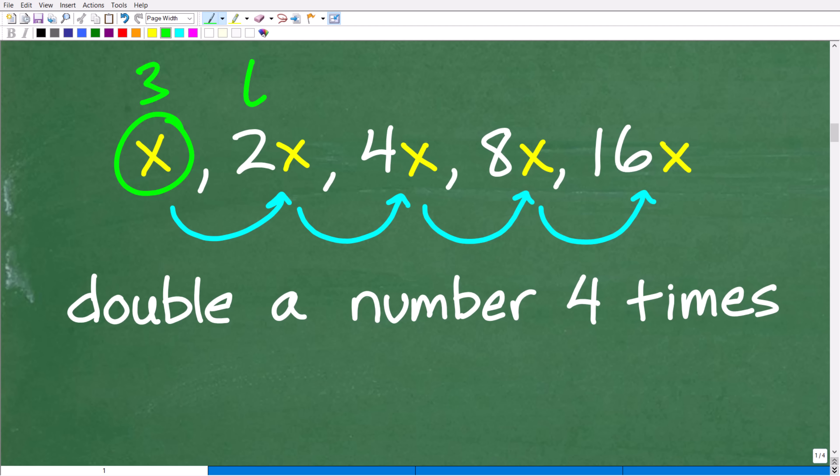For example, if I have 3, if I double 3, that would be 6. So, doubling means we're going to multiply by 2, right? So, here is our first double. So, that gets us to 2x.